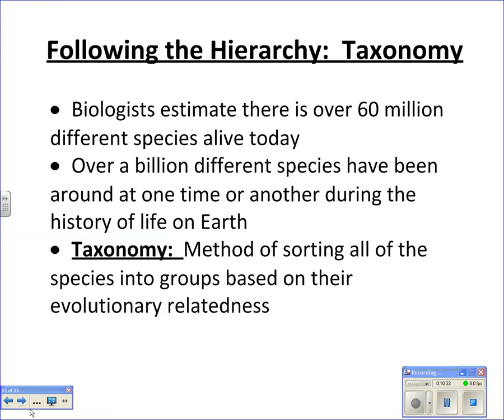Now we're going to talk about the biodiversity we can find in life today and how we organize it. There are so many different species on Earth — we estimate over 60 million alive today and something like a billion different species that have existed at one time or another. That's way too many to keep track of, so we have an organizational method called taxonomy — our method of sorting all species into groups. Currently we use evolutionary relatedness to place them in phylogenetic trees or cladograms.